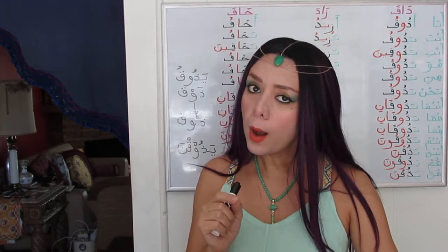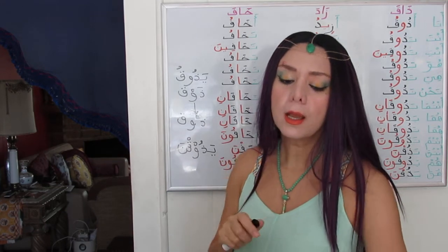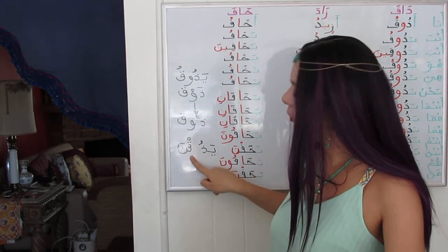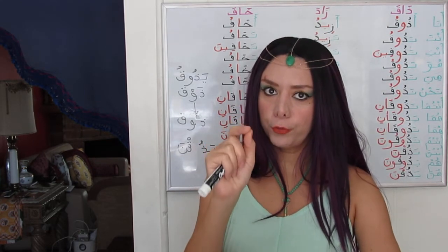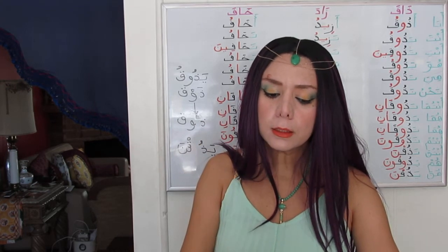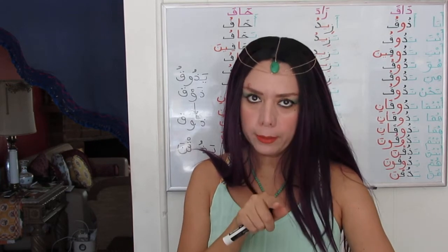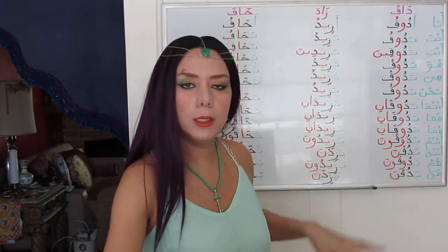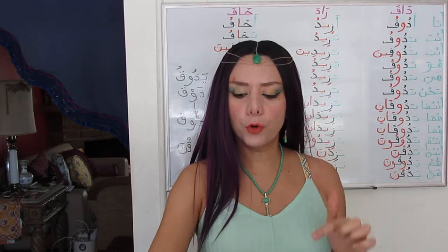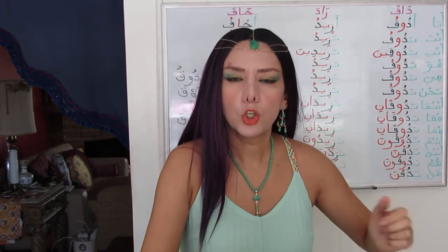This is the reason why the waw ceases, and the dhamma takes over by being placed on top of the first radical. This shortening takes place only for hunna and antunna — only these ones, only the group females. Now let's bring to light the verb زاد (zada), meaning to add or to increase.